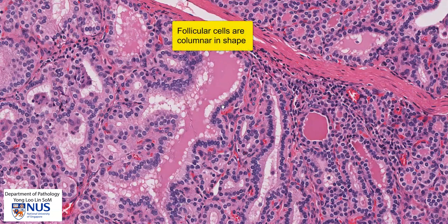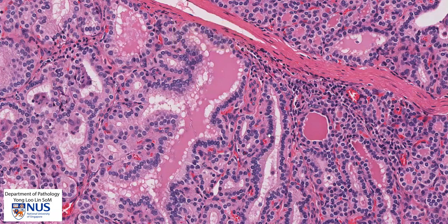This is taller than the usual follicular cell, which is cuboidal in shape. We can see the cells are quite tall. They have quite abundant cytoplasm. The nuclei are more or less basal, and they are very uniform.